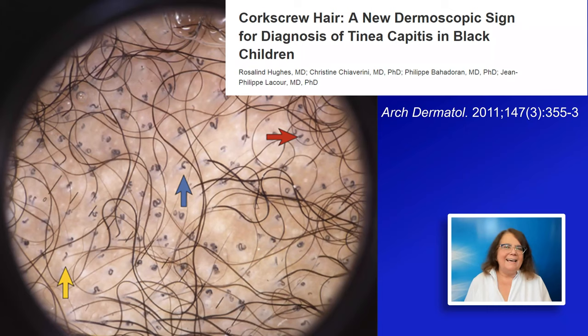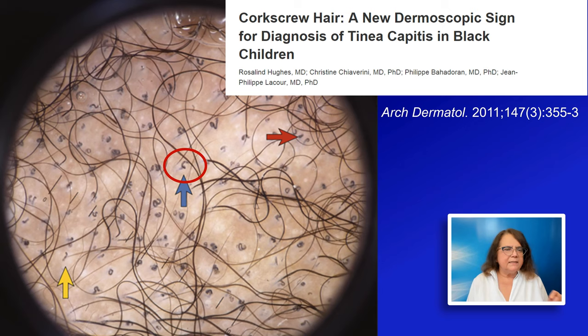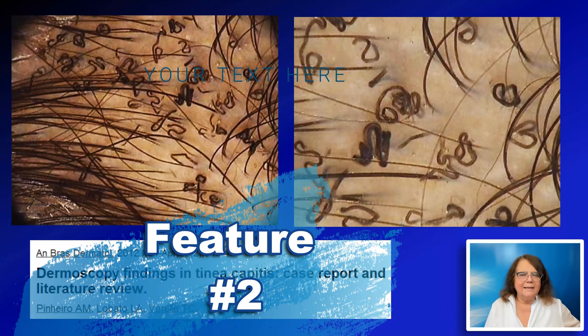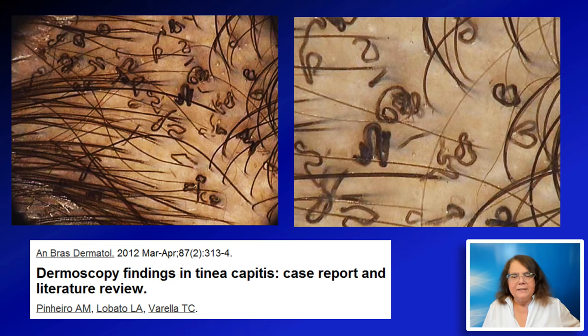Another trichoscopy feature of tinea capitis, described mainly in patients with dark skin phototypes, are the corkscrew hairs. These are comma hairs which tend to coil multiple times, forming a corkscrew-like structure. Here is an example published by Anna Maria Pinero and co-workers, showing multiple corkscrew hairs in a patient with tinea capitis.